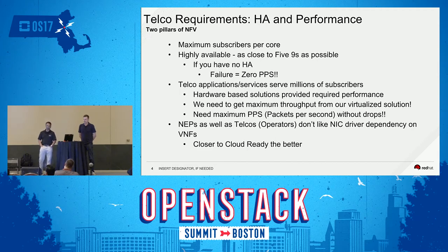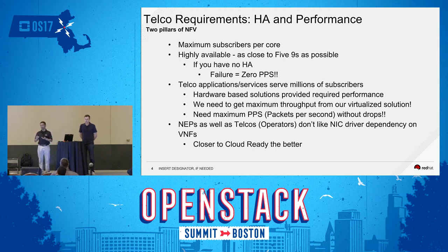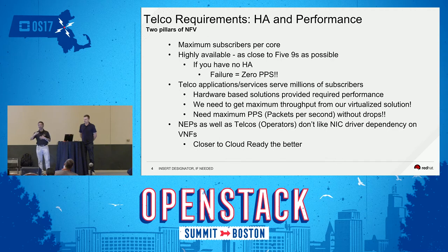How do you get high availability as close to five nines as possible? Because here we have a tiered architecture: you have your data center at the bottom, the hardware, and then on top of that you have the network function virtualization infrastructure, which is typically OpenStack in our case. And then on top of that you have the VNF. So the high availability is tiered — you cannot get high availability unless you have some sort of cohesive method from the top to the bottom of the stack.